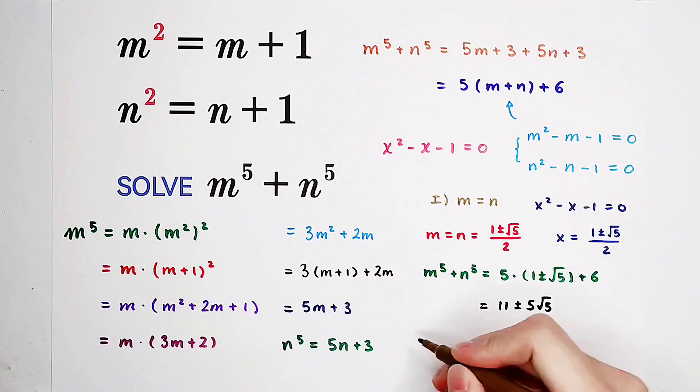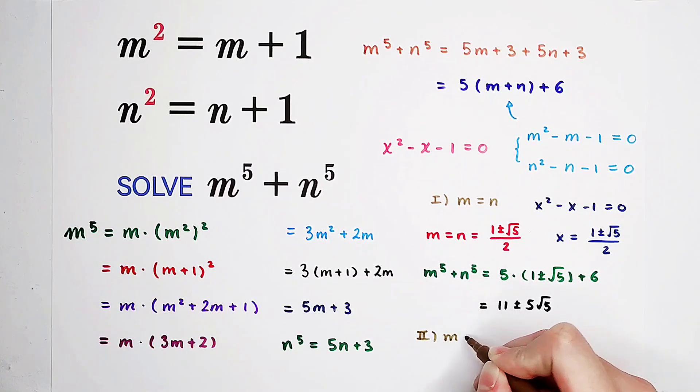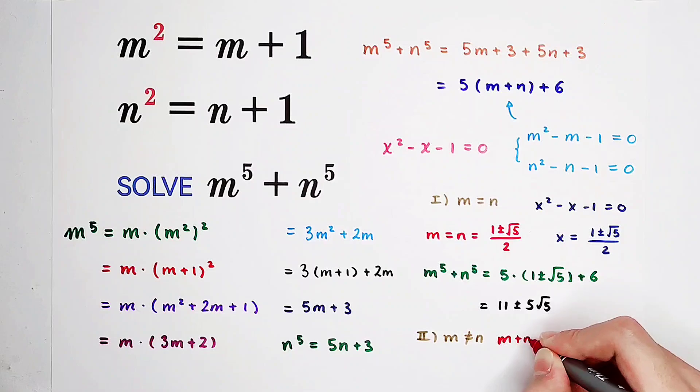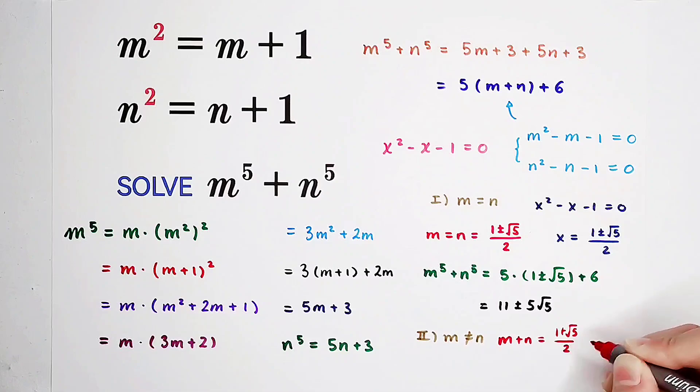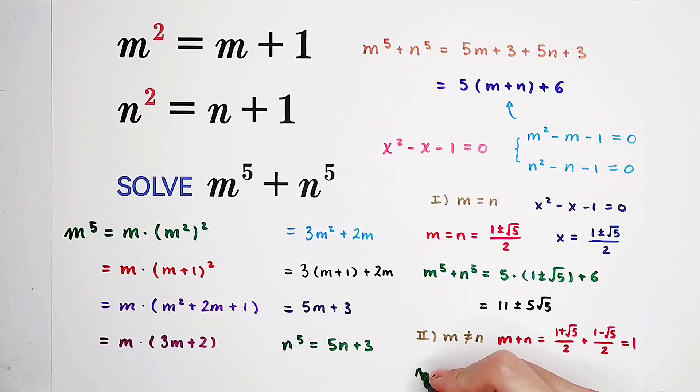Now the second case. The second case is of course if m is not equal to n. Then m plus n is of course, what is m plus n? 1 plus square root of 5 over 2 plus 1 minus square root of 5 over 2. Now you can see plus square root of 5 minus square root of 5, they cancel each other. Then 1 over 2 plus 1 over 2, m plus n is just 1. In the end, m to the power of 5 plus n to the power of 5 is 5 times 1 then plus 6. So the answer is 11.